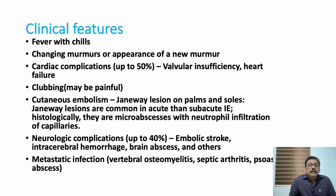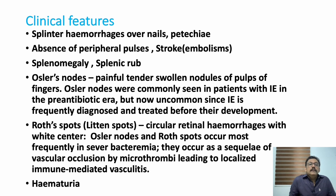Neurological complications include embolic stroke, intracerebral hemorrhage, brain abscess, and sometimes seizures. Metastatic infection can produce vertebral osteomyelitis, septic arthritis, and abscesses in different areas. Other clinical features include splinter hemorrhages in nails, peripheral pulses can be absent due to embolism, and splenomegaly with splenic rub. Osler's nodes are painful, tender, swollen nodules of the pulp of the fingers.